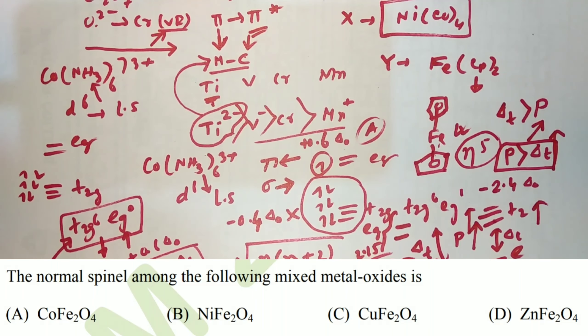The next question asks about normal spinel among mixed metal oxides. I have already made a video on normal and inverse spinels — you can check it by clicking the i-button. The final answer is D, that is ZnFe2O4, which is a normal spinel; the others are inverse spinels.